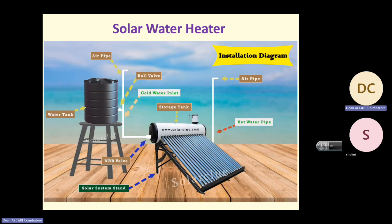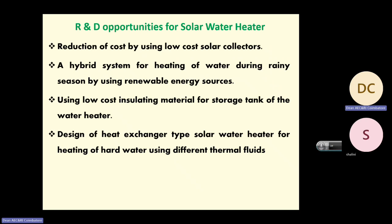Solar water heaters also have problems — about 90 percent do not work properly. Even on a cloudy day there is no hot water. R&D opportunities include reduction of cost using low-cost solar collectors, development of a hybrid system for heating water during rainy seasons using other renewable energy sources, using low-cost insulating material for storage tanks, and design of heat exchanger-type solar water heaters for heating hard water using different thermal fluids that have the ability to absorb and transfer heat.